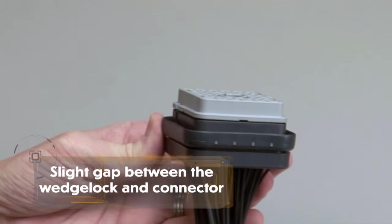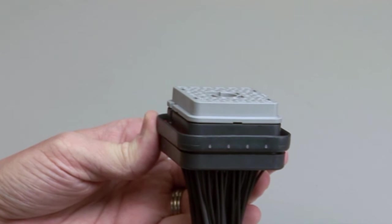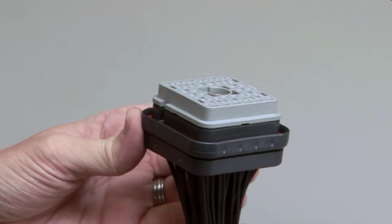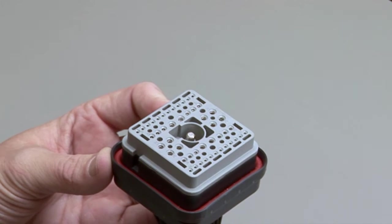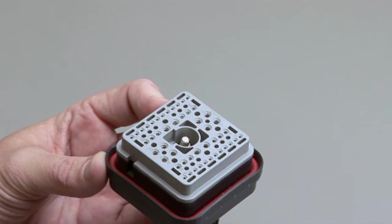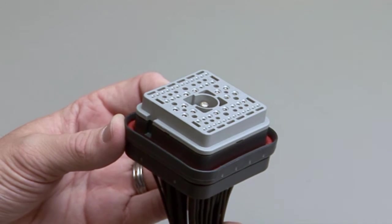If the wedge lock will not go all the way in, check to make sure all of the contacts are properly seated. If a contact is not fully inserted, the retention finger will prevent the wedge lock from pressing into place.